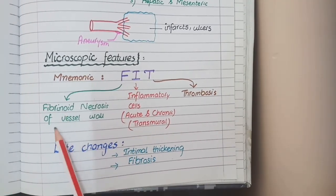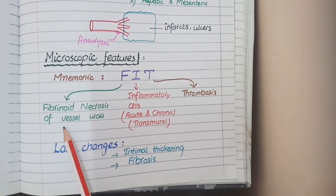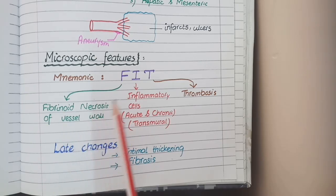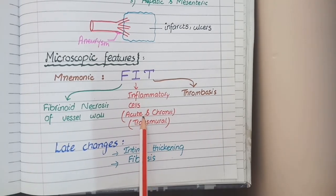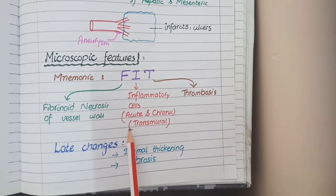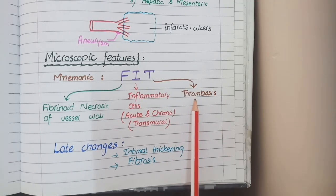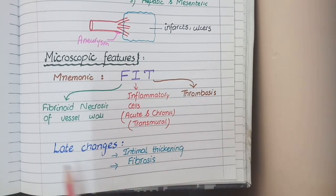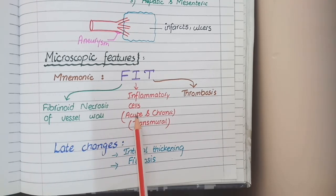For microscopic features, the mnemonic to remember is FIT. F stands for fibrinoid necrosis of the vessel wall — on microscopy you see fibrinoid deposits with necrotic cells. I stands for inflammatory cells, which include both acute and chronic inflammatory cells present all over the vessel wall. T stands for thrombosis, indicating the presence of a thrombus in the vessel lumen. So the microscopic picture of polyarteritis nodosa shows fibrinoid necrosis, inflammatory cells, and thrombosis.